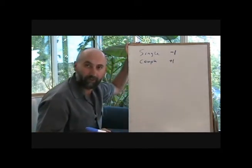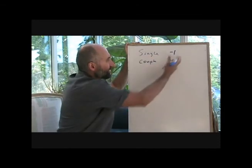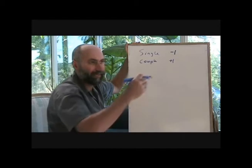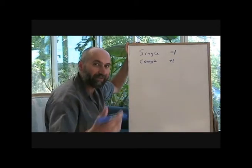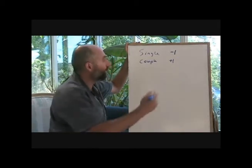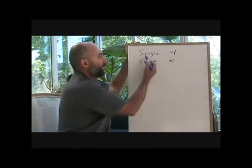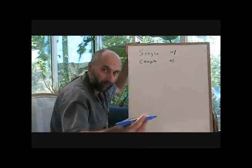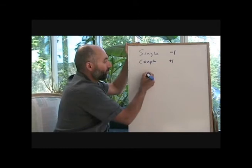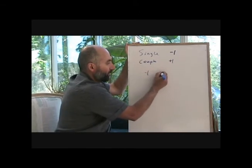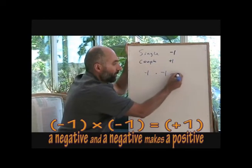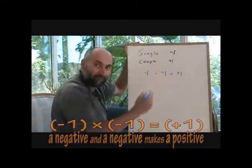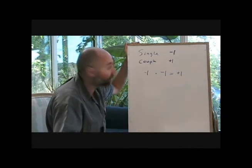Given this let statement, and in mathematics you do a lot of let statements where you say let x equal something so you're defining what x is, we're doing the same thing. We're saying a single person is negative one and a couple is positive one. So if we take two single people, negative one, and merge them, negative one times negative one, you get positive one, which is consistent with our let statement, consistent with the language of mathematics, and also consistent with English.